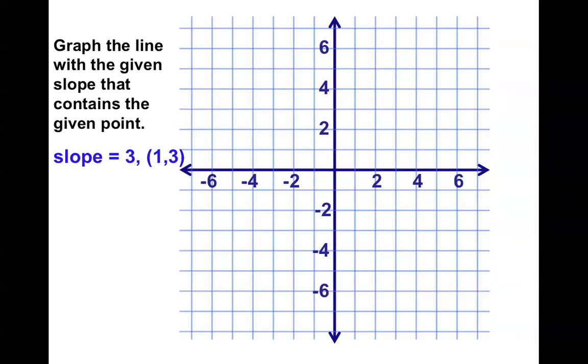If I gave you a point and I gave you the slope, it would be pretty easy to graph. Notice, here is point 1,3, which is right here. And then I know the slope is 3. Slope is easy and fun. Just remember, rise over run. So rise 3, run 1. Up 3 over 1. Up 3 over 1. And I get my next point. I have my graph. So if I give you a point and I give you the slope, it's pretty easy to graph.